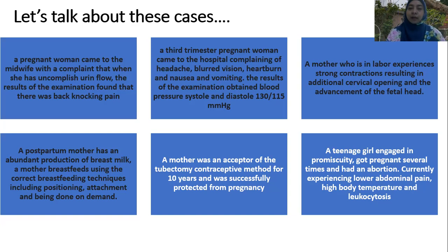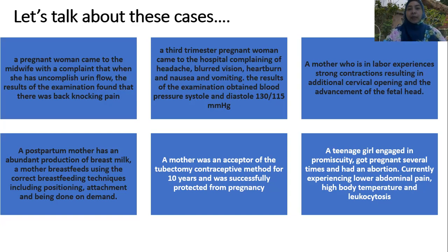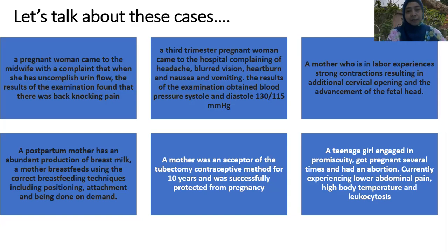The second case: a trimester pregnant woman came to the hospital complaining of headaches, blurred vision, heartburn, nausea, and vomiting. The examination found blood pressure of 130/150 mmHg for systolic and diastolic. Can you figure out what this case is?